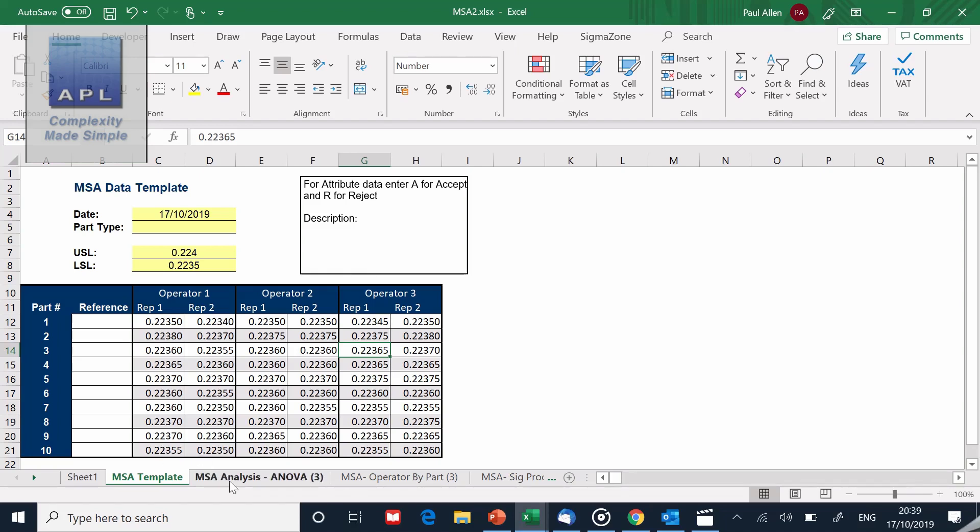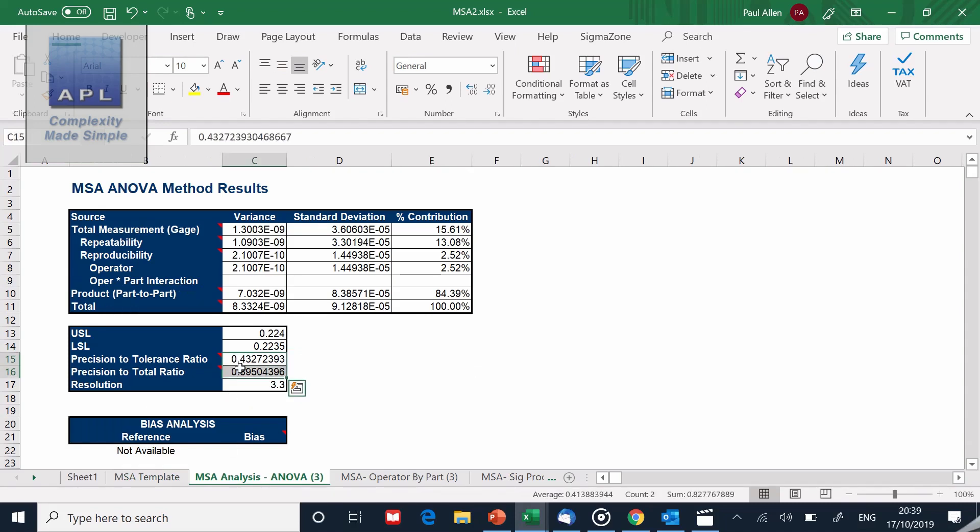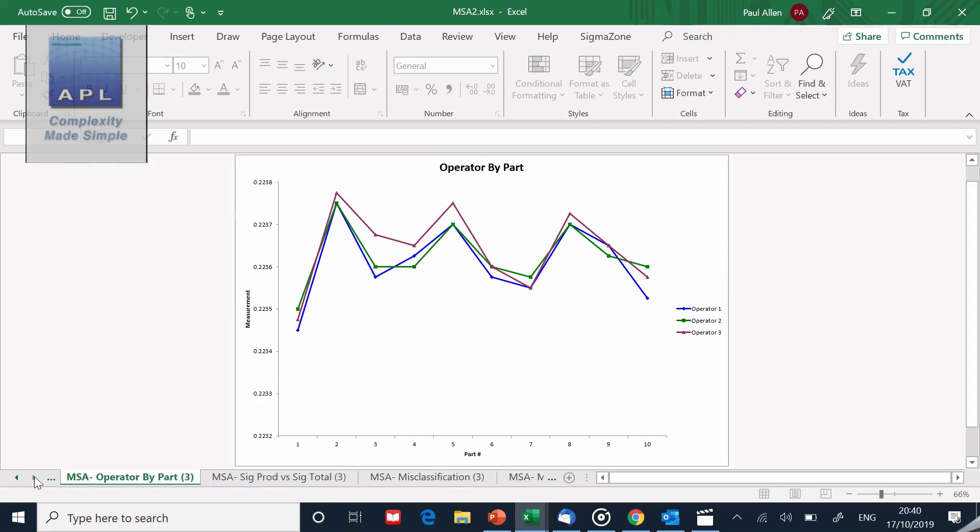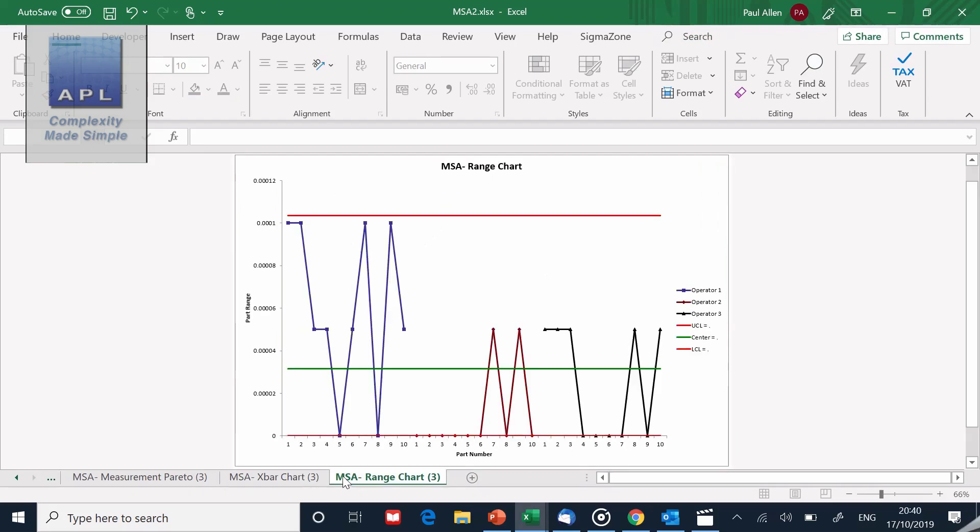Now if we take a look at the results, the precision to tolerance and the precision to total, we're looking at precision to tolerance of 0.43, so in other words 43% of the tolerance is being used up by measurement error. And if we look at precision to total, 39% of all the variability that we are seeing is coming from the measurement system. So clearly that doesn't pass the normal rules which would be 10% in this case. Now if we look down the graphs, let's take a look at the operator by part graph. You can see that everybody's measuring the parts, they're getting bigger together, they're getting smaller together, so that's okay.